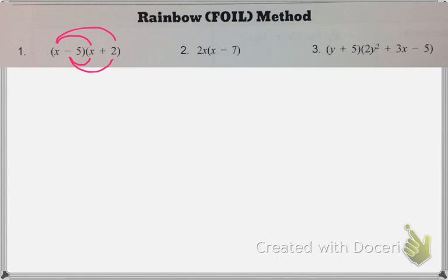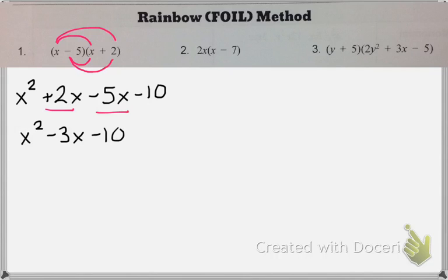Okay, so I'm going to start with that x times x, and I get x squared. And I have x times 2, which is 2x, negative 5 times x, and negative 5 times 2. And then from here, all I need to do is combine like terms. So I can combine 2x and negative 5x, so I get x squared minus 3x minus 10. And I'm done multiplying.